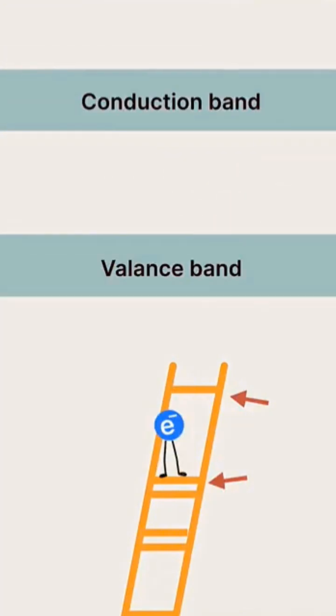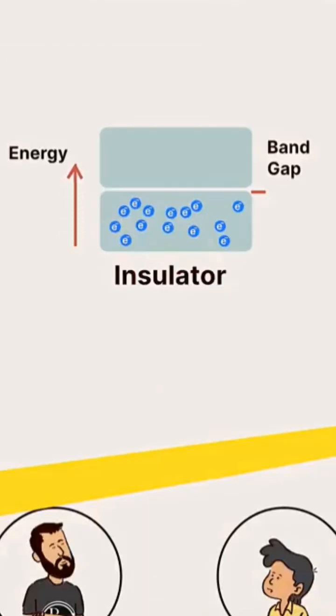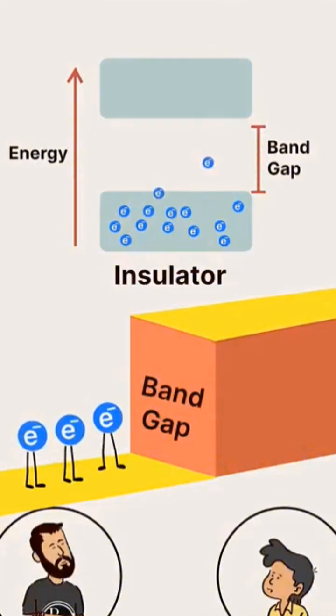In an insulator, the energy gap between these bands is large. So even when a voltage is applied, electrons cannot cross it.